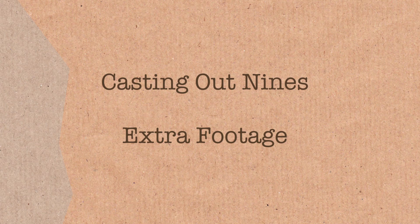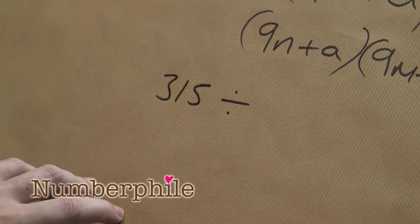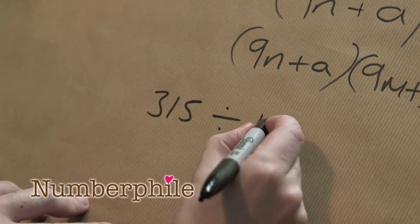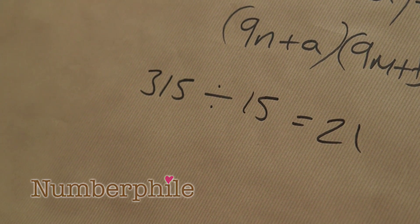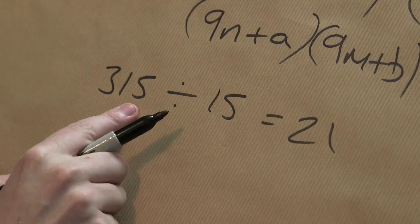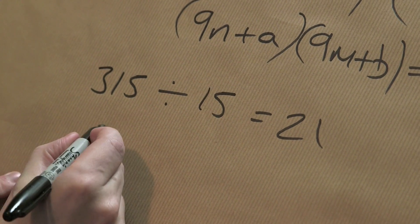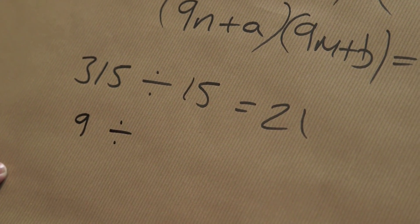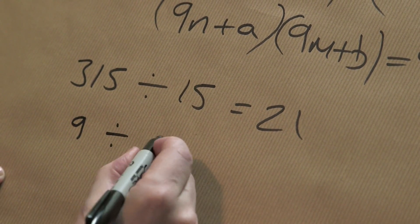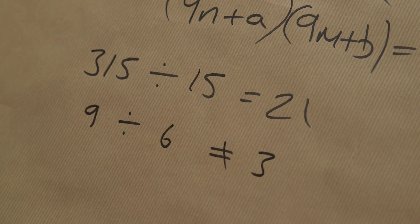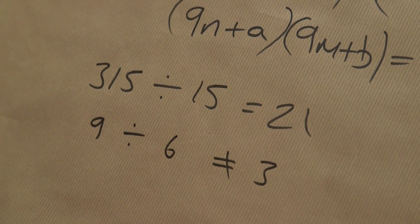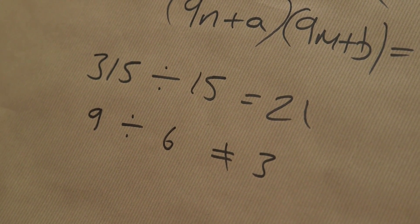Let's do this for example: 315 divided by 15, and that's equal to 21. You'll notice if you just did the digital roots on these, this would be a 9, and this would then be divided by 1 plus 5, which is a 6. That doesn't equal 3, does it? That makes no sense. No, this doesn't work with division — you would have to turn a division into a multiplication.